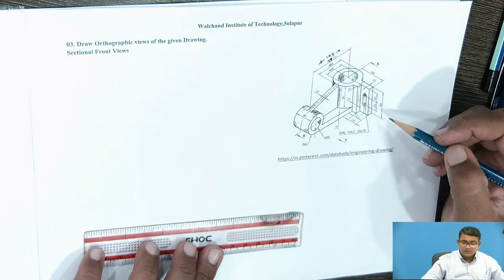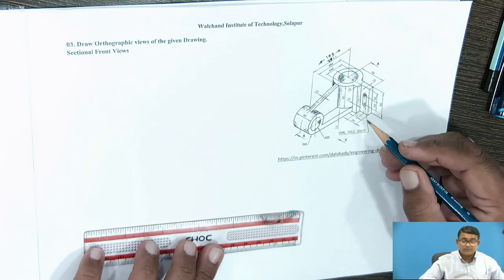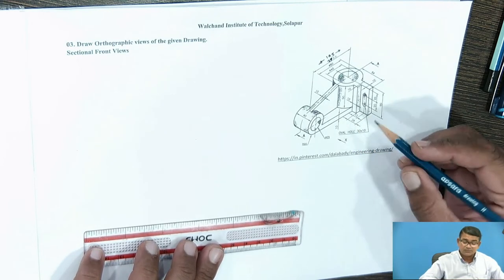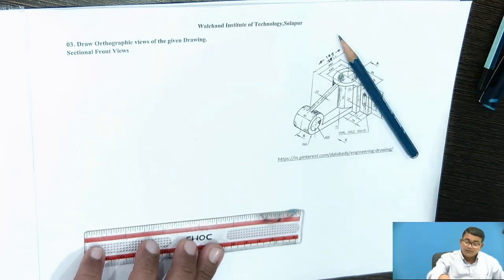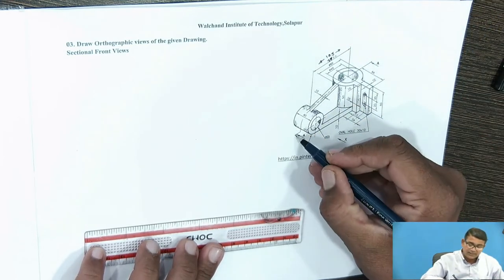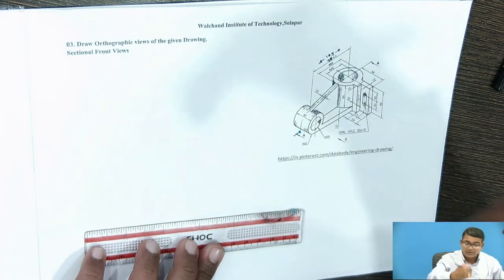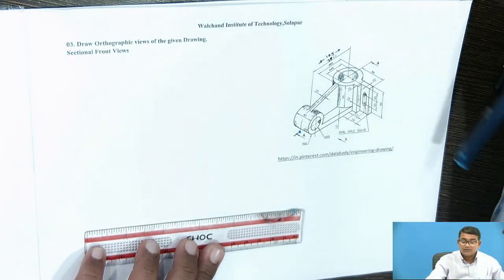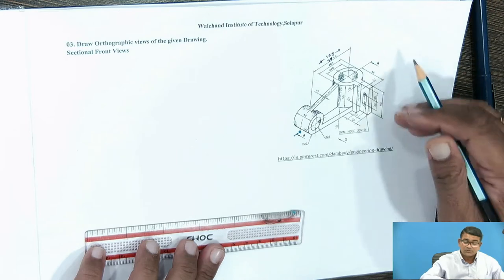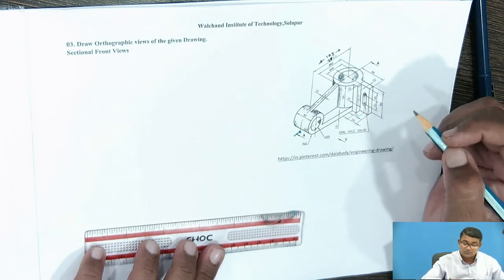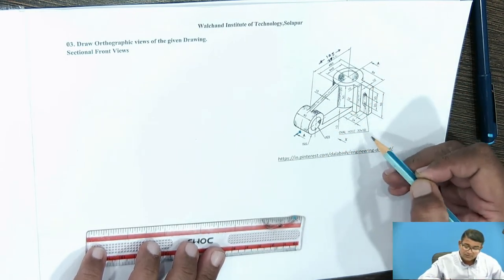This is the object. In the direction of X we have to draw the front view, but that front view is a sectional front view. The section line is given here, from line AA, and it moves to here — half the part you have to cut. The front portion you have to remove. For that purpose, first we have to take the maximum dimensions.